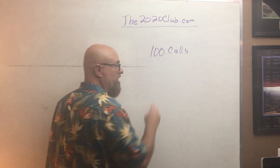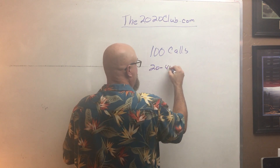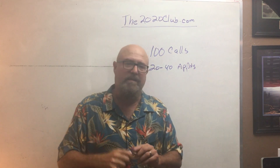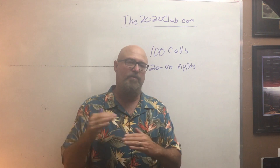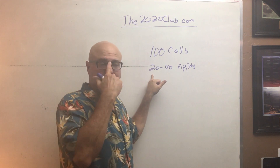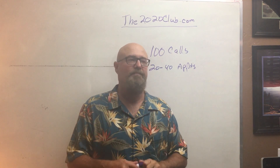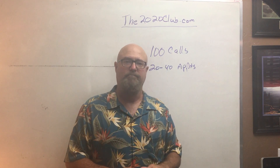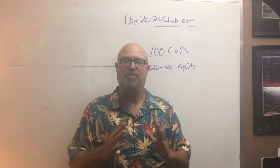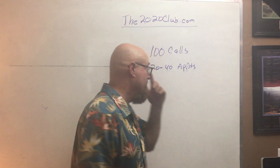For every 100 phone calls that I make, I'll set anywhere from 20 to 40 appointments. Each of the leads comes with a call me in the morning, call me in the afternoon, call me in the evening time slot. If you follow those guidelines, you'll get closer to the 40 number. If the only time you call is the evening, you'll get closer to the lower number. Now, 20 to 40 appointments — when was the last time you had 20 appointments for your program? What if everybody over the next 30 days had just 20 appointments? That's why this works.